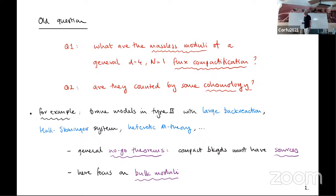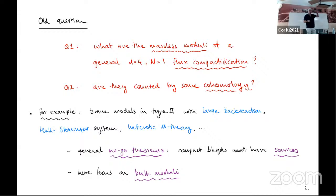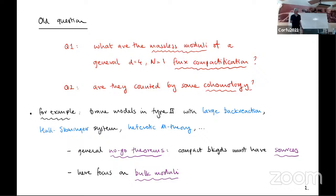I'm going to talk about a very old question: what are the massless moduli when I do a completely generic flux compactification to four dimensions, preserving supersymmetry? And are those moduli counted by some cohomology? We know when there's no flux — on a G2 manifold or something — the moduli are counted by some suitable cohomology. Is there a similar situation when I have a background with flux, including the full back reaction? It could be type II models with brane sources with large back reaction, the whole Strominger system, or heterotic M-theory.